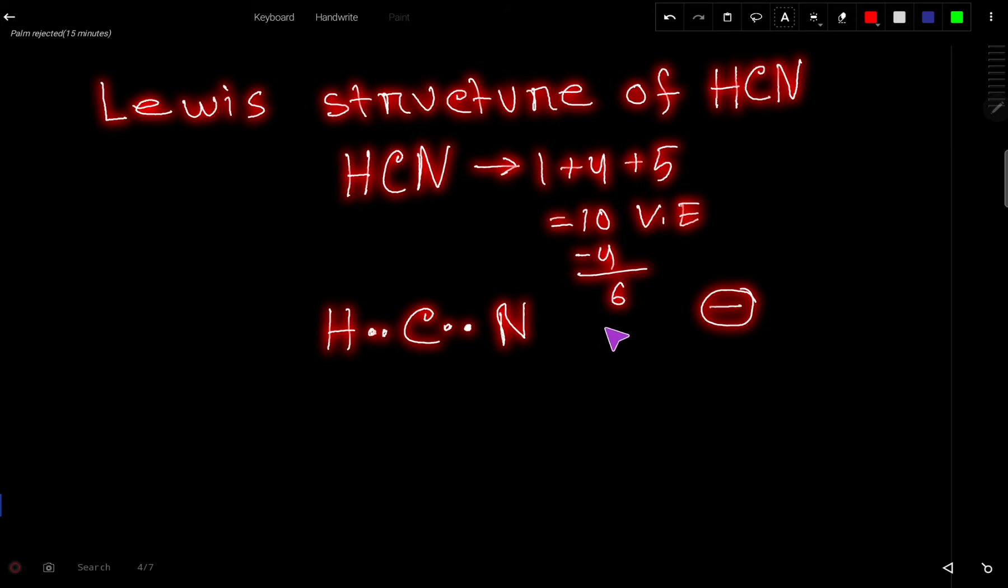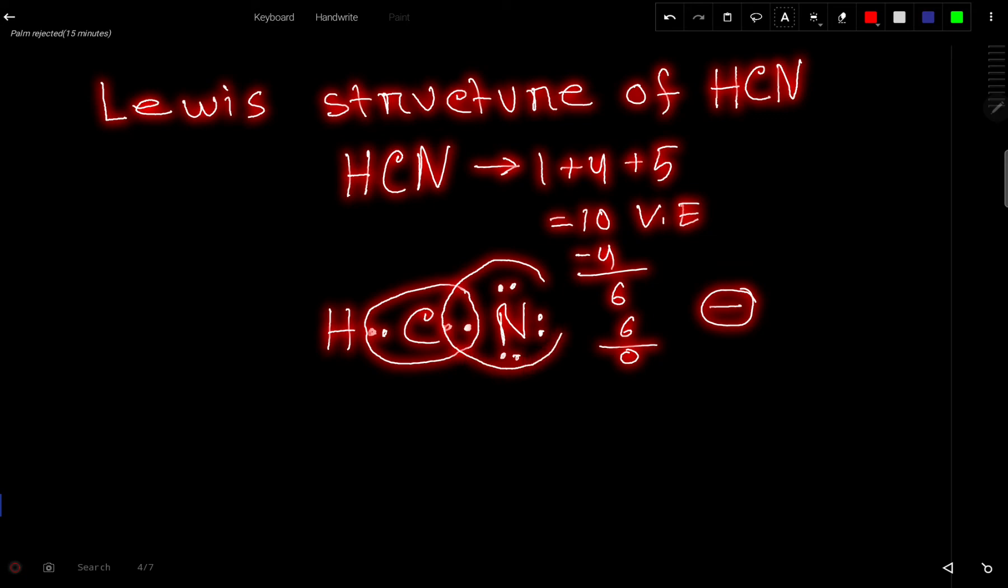So these six valence electrons will be used to satisfy the octet for the outer atoms. First, nitrogen is an outer atom. So this nitrogen has two, so it will take maximum six. So now we have used all the valence electrons but this carbon has only four valence electrons and this nitrogen has eight.